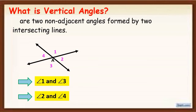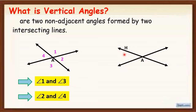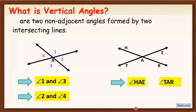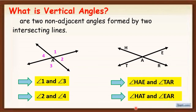For another example, I have two lines here and their point of intersection is A. I'm going to name this point as H, this one is E, this one is R, and this one is T. In this figure, angle HAE and angle TAR is a vertical angle, and angle HAT and angle EAR is also a vertical angle.